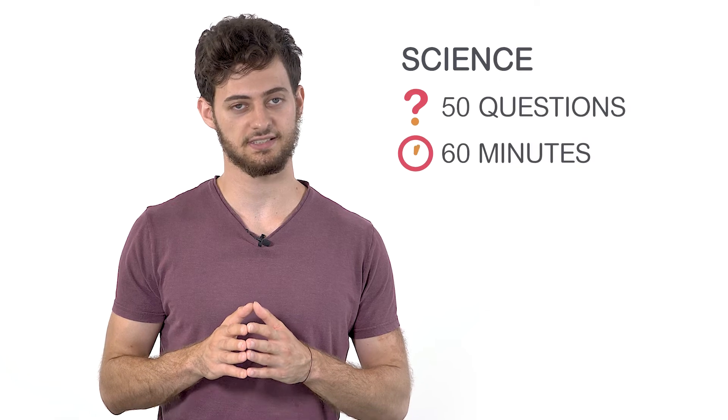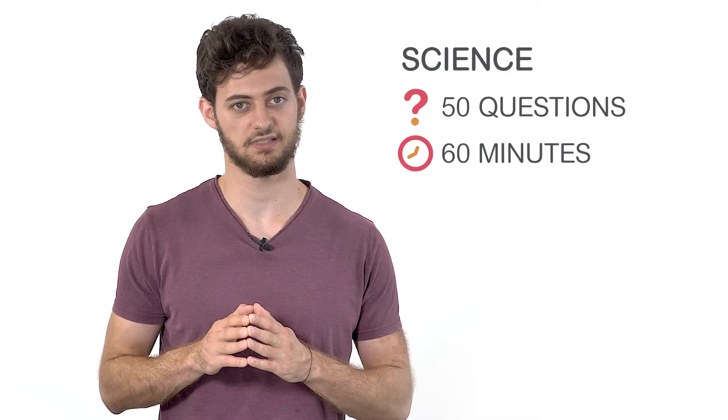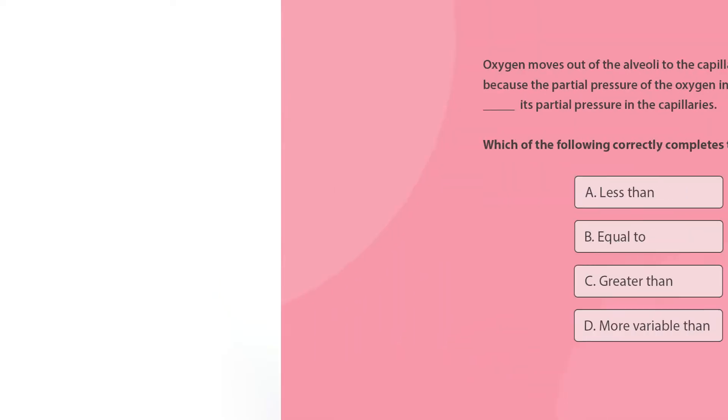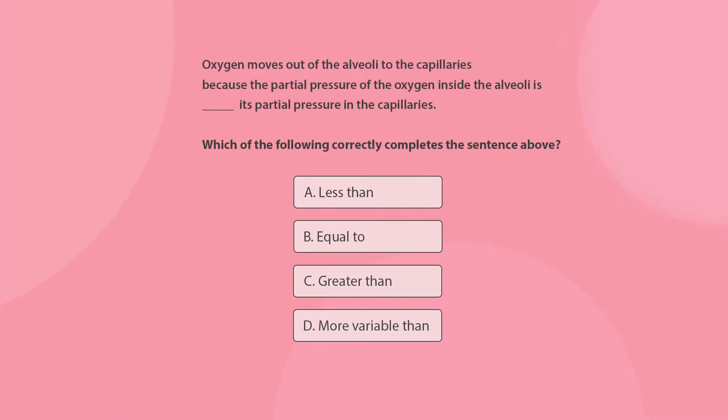The next section is the science section which consists of 50 questions to be completed in 60 minutes. This is the largest section of the TEAS and it requires the most extensive memorization. For an easier time studying use visual aids such as lists and flashcards. Here is an example of a science question. Pause the video if you want to try it yourself.